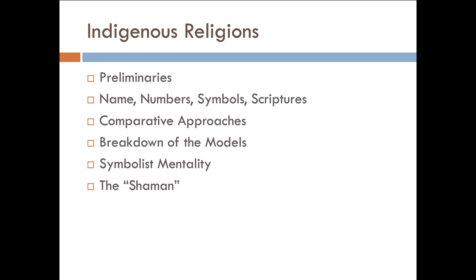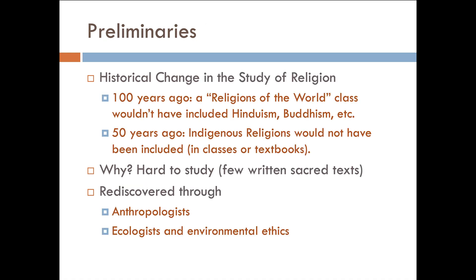Here's what we're going to do in this lesson. We're going to first go over some preliminaries. Then we'll talk about the name indigenous religions, how many practitioners of indigenous religions there are, what some of the symbols are, whether or not they have scriptures, etc. Then we will apply our comparative approaches, the transformation model and the worldview model. I'm also going to note why some of these models break down when talking about indigenous religions. And then finally we're going to close by talking about the symbolist mentality and what the role of the shaman is in indigenous religions.